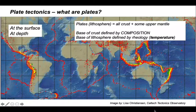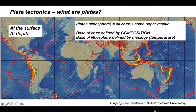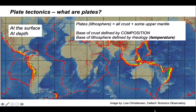So what are plates? Plates are lithosphere. They consist of all of the crust and the stiff part of the mantle — the upper mantle. The base of the crust is defined by composition. The base of the lithosphere is more dynamic; it's defined by the rheology of the upper mantle, which in turn is controlled by the temperature of the upper mantle. Temperature can change, and so too can the position of the base of the plate.